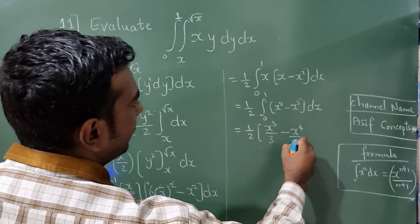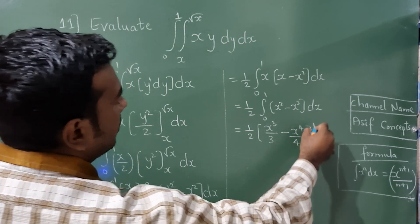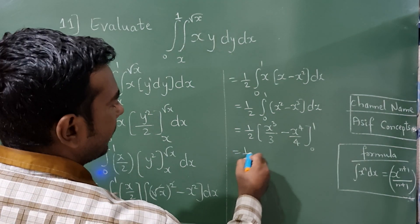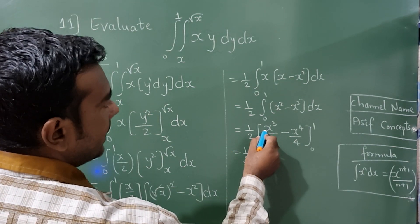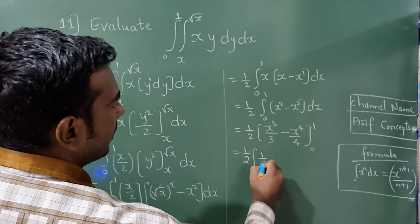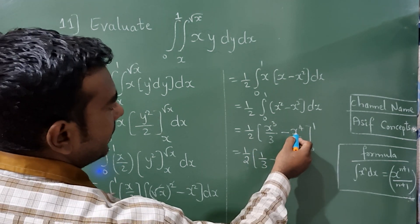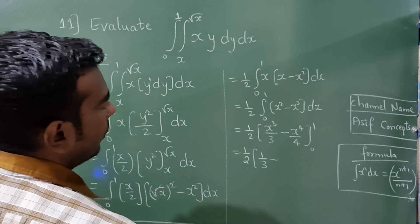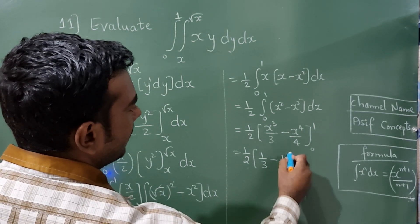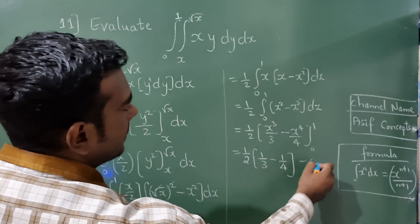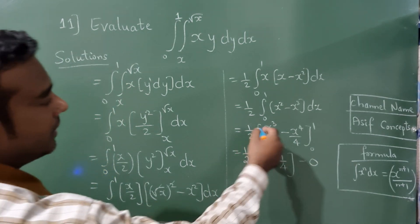This is the trick to integrate. Now limits are from 0 to 1. 1 by 2, where there is x substitute 1, and 1 cube is 1, so 1 by 3 minus where there is x substitute 1, so 1 raised to 4 is 1 itself by 4. Lower limit is 0, 0 upon anything is 0.